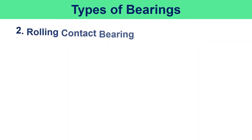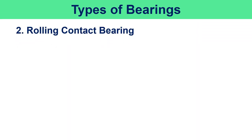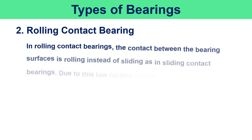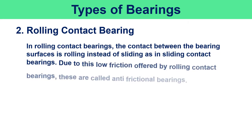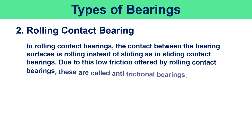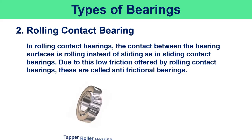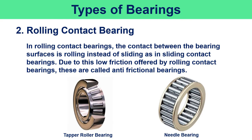In rolling contact bearings, the contact between the bearing surfaces is rolling instead of sliding, as in sliding contact bearings. Due to the low friction offered by rolling contact bearings, these are called anti-frictional bearings. Taper roller bearings and needle roller bearings are examples of rolling contact bearings.